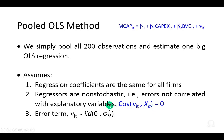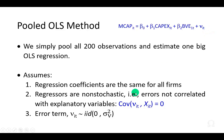Finally, and importantly, we assume that the error term is identically and independently distributed about the mean of zero with a constant variance — the condition of homoscedasticity. Essentially, this means that we assume our error term to be white noise.